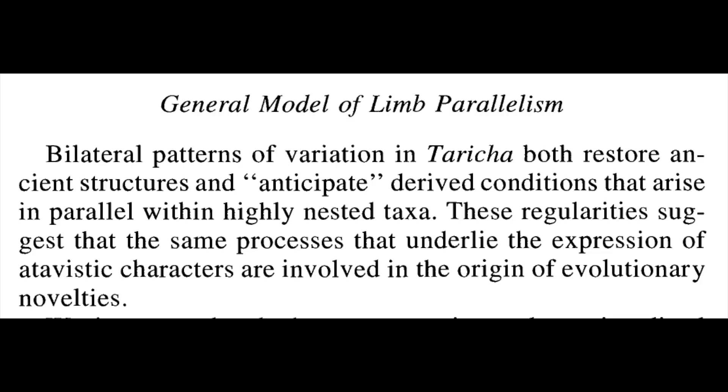To compare that variation to other species and determine that there might be deep rules shaping the paths of least resistance for evolutionary variation. Shubin writes in the discussion: "Bilateral patterns of variation in Taricha both restore ancient structures and anticipate derived conditions that arise in parallel within highly nested taxa. These regularities suggest that the same processes that underlie the expression of atavistic characters are involved in the origin of evolutionary novelties." This reflects an ongoing interest in evo-devo. We often talk of constraints on development that limit the direction evolution can take, but the flip side is that these variations can also generate unexpected innovations. I think of it as a kaleidoscope effect — there are only a limited number of pieces of colored glass, but vast numbers of combinations and relationships can be generated.